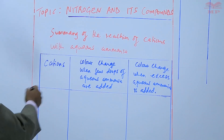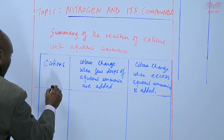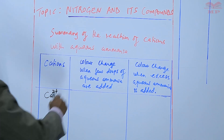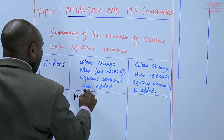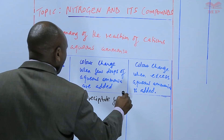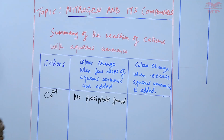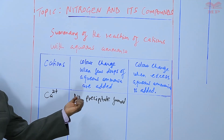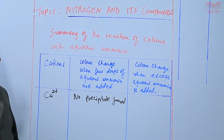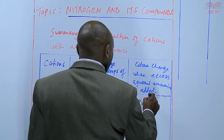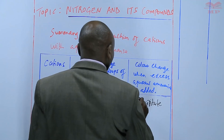We'll start with calcium ions. When a few drops of aqueous ammonia are added to calcium ions, there is no precipitate formed. That is because aqueous ammonia does not have enough hydroxide ions to precipitate calcium ions. Also, when you add excess, there is still no precipitate formed.